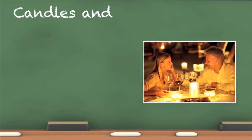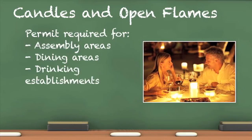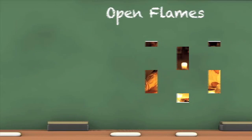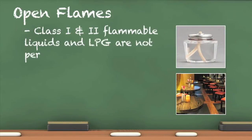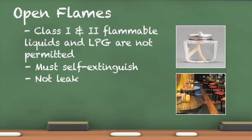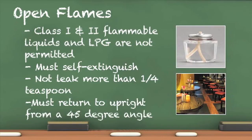A permit is required to use an open flame or candle in connection with assembly areas, the dining area of restaurants, or drinking establishments. Once the inspection has been finalized and all violations, if any, are corrected, the fire inspection report is your permit from the fire department to have candles and open flames. Stringent regulations govern open flames in the A occupancy: Class 1 and 2 flammables are not permitted. Lighting devices with more than 8 ounces of fuel are required to be self-extinguishing and not leak more than a quarter teaspoon per minute when tipped over. If the lighting device does not self-extinguish when tipped over, it must self-return to an upright position.